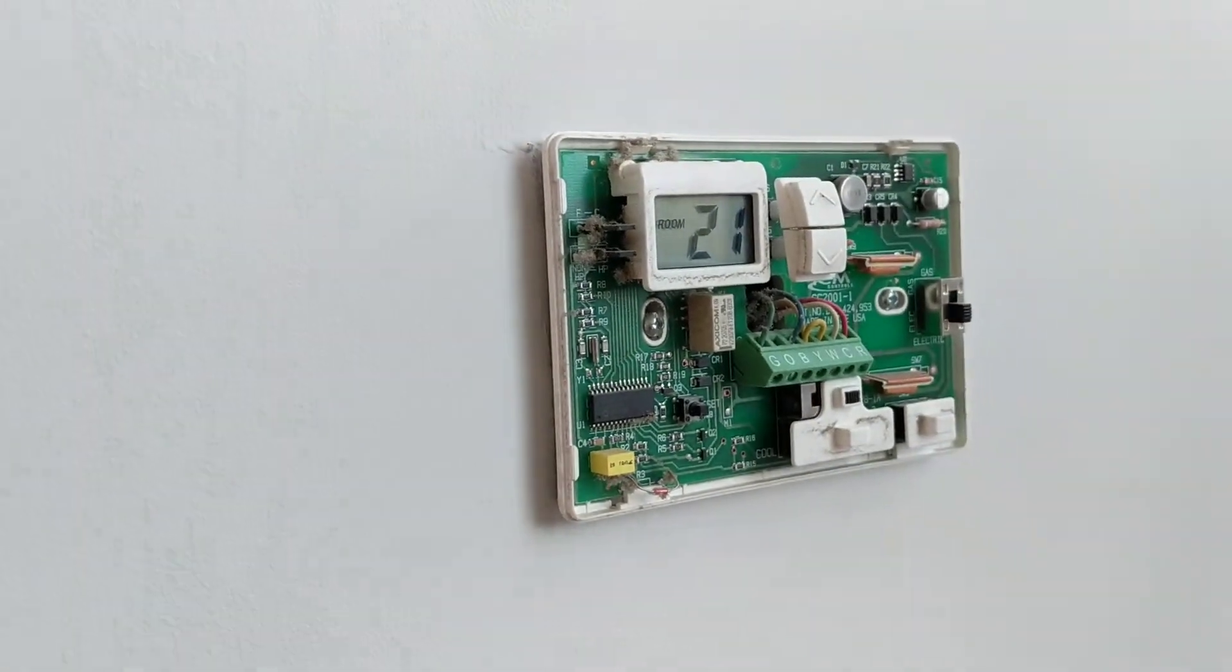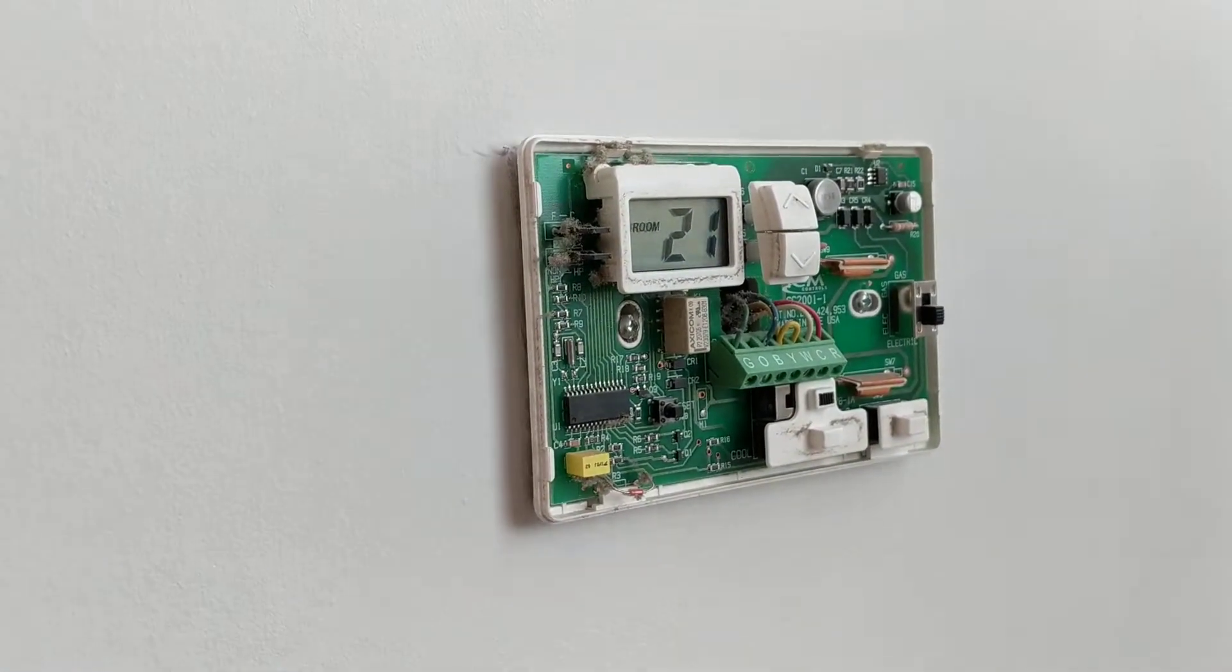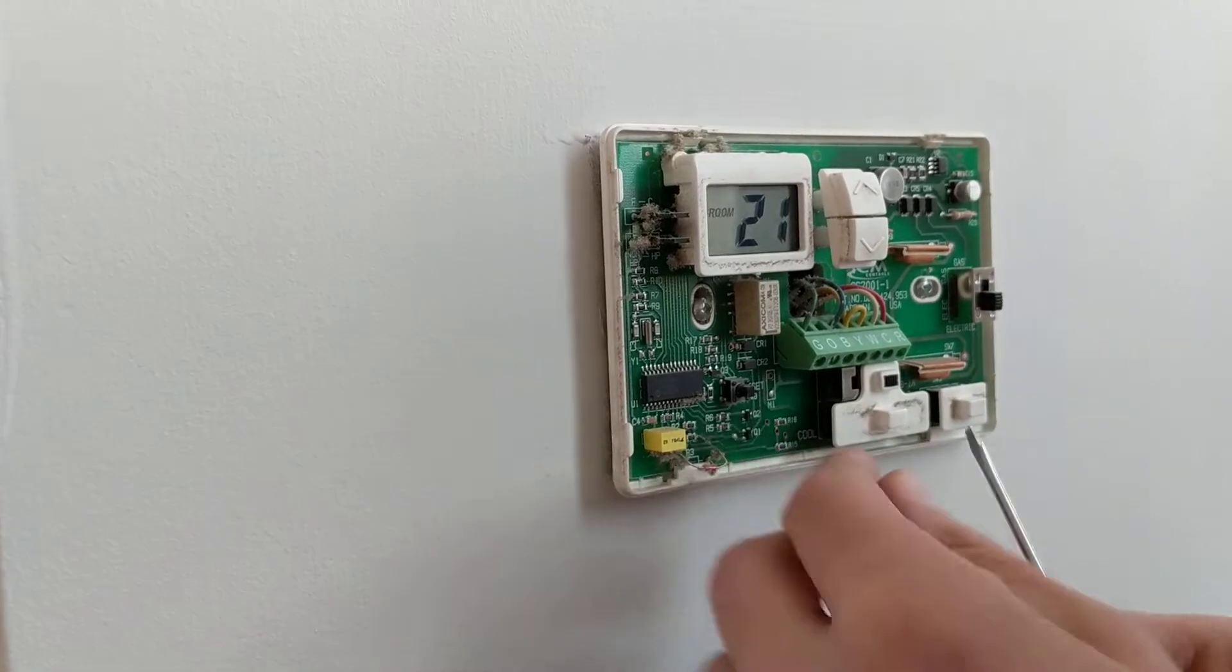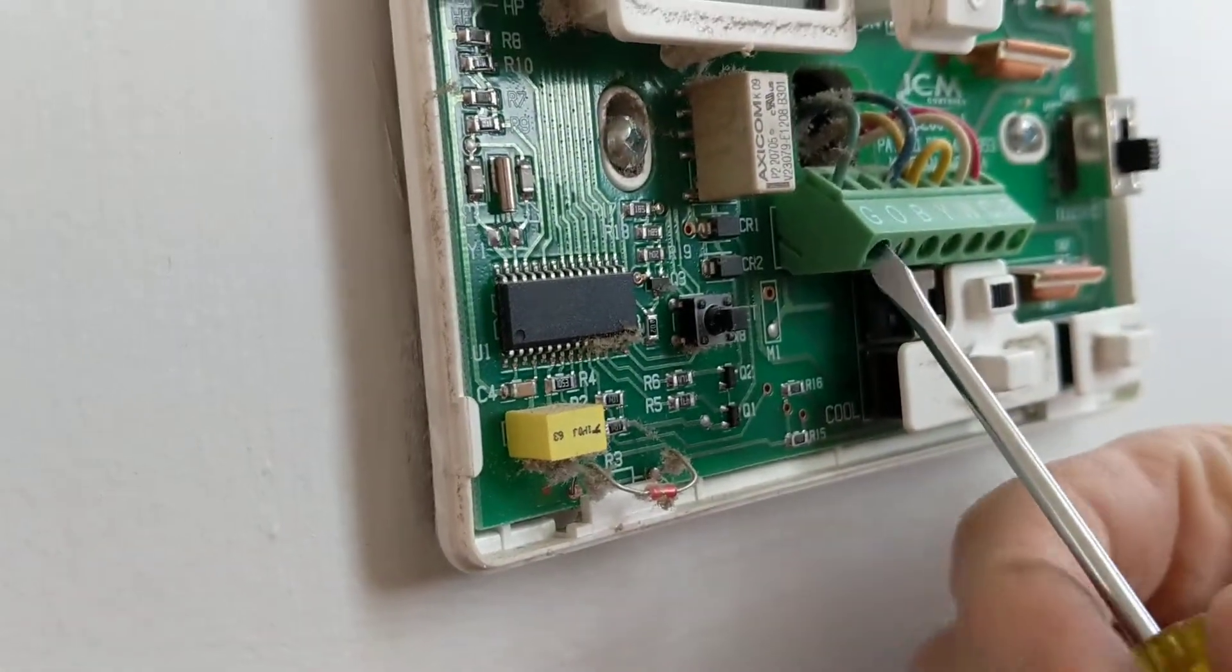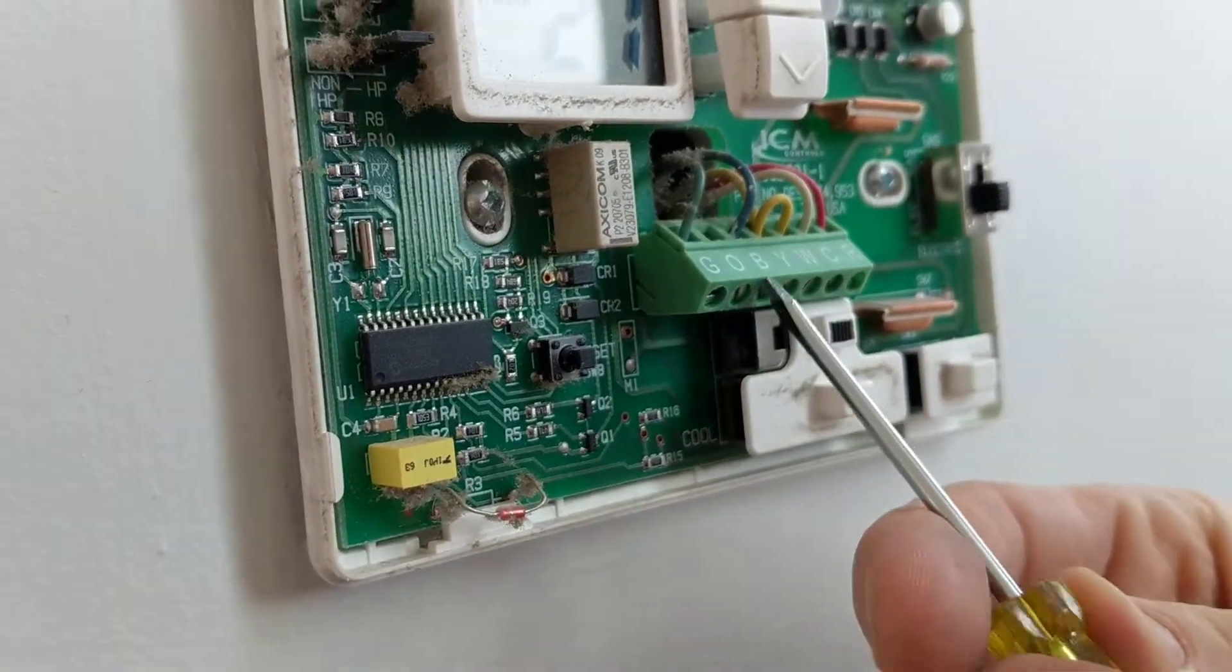So the first thing we're going to do is take off these. There's a little screw, a little flathead screw in the bottom. I'm just going to loosen that a little bit and these are all going to come out.